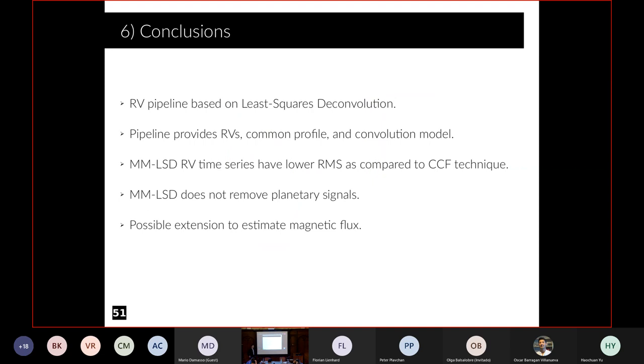So conclusions. We have a Python pipeline that uses LSD to get high precision RVs. The RVs have lower scatter compared to the CCF technique. It's very flexible. You can choose the lines you want to include or exclude. You also get a common profile and the convolution model, so you can compare your spectrum with the model and see how deviations evolve in time. We do not remove planetary signals. There's a possible extension for magnetic flux, and this will be available.